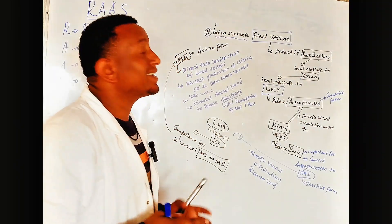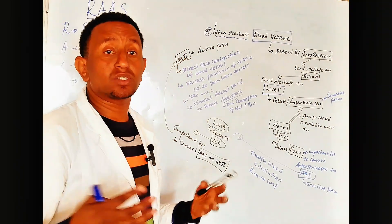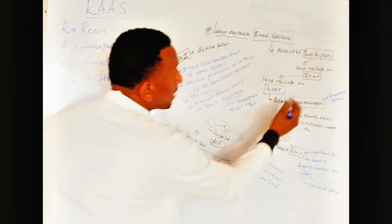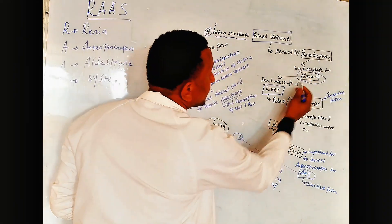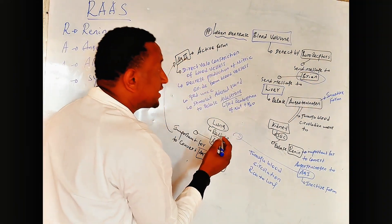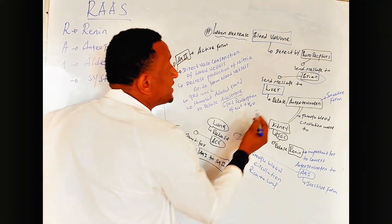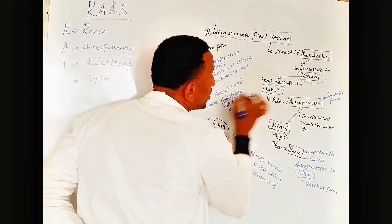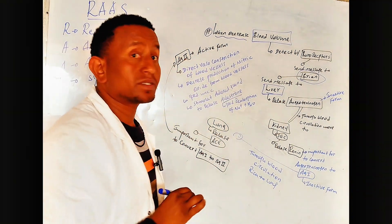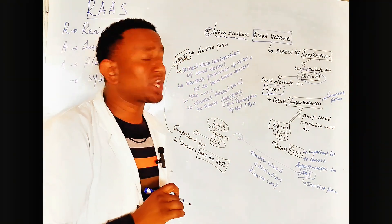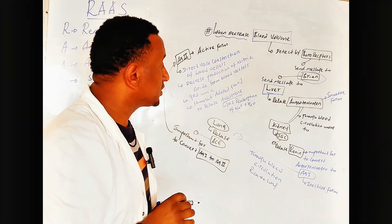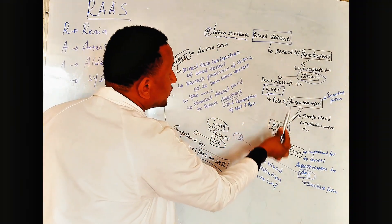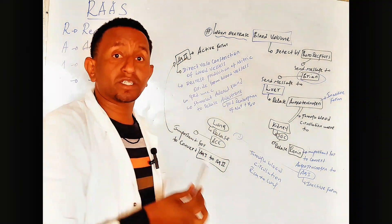When the message reaches to the brain, the brain detects this message and sends the message to the liver. So in the Renin-Angiotensinogen-Aldosterone System, the organs involved are the liver, kidney, and lung.